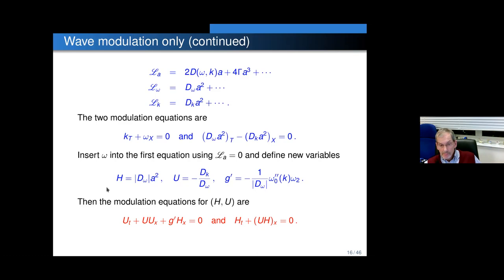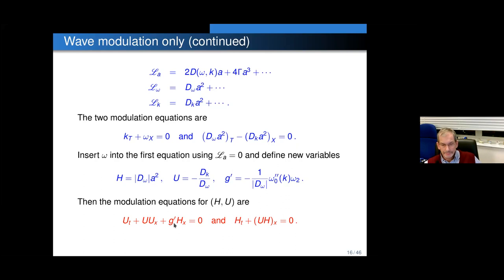The only difference is g prime is not a constant — it's a function of the wave number, specifically omega zero double prime times omega two. That is what I'll call the Whitham index, because its sign determines whether the characteristics in basic Whitham modulation theory are hyperbolic or elliptic. When g prime is negative, these equations are ill-posed. So the ill-posedness of Whitham modulation theory is encoded in just one single parameter in the equations.